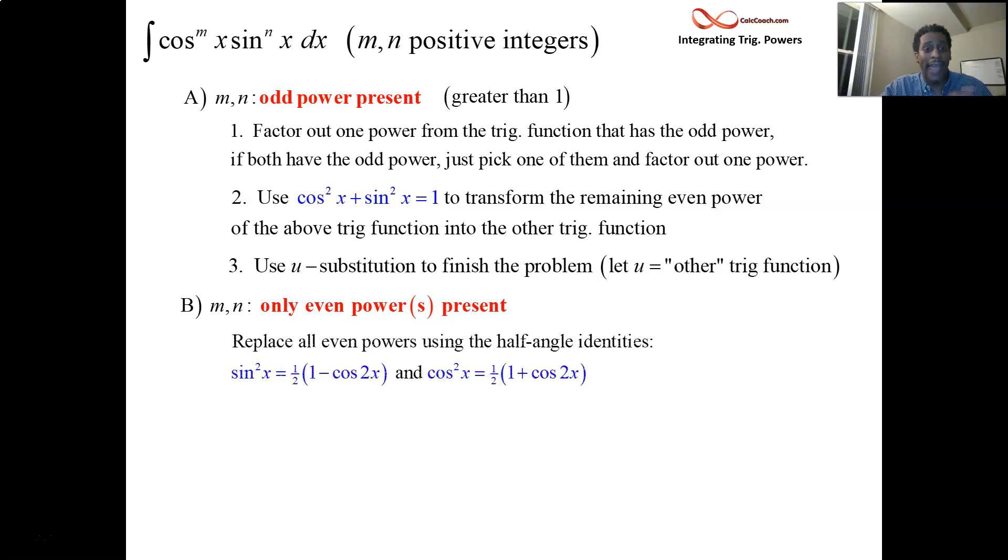The something else is using the half-angle identities. Replace all those even powers with these two identities. If you have a sine squared, you're going to replace that with one-half the quantity of one minus the cosine of 2x. If you have a cosine squared, you're going to replace that with one-half the quantity of one plus the cosine of 2x.